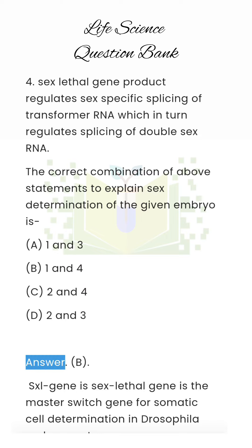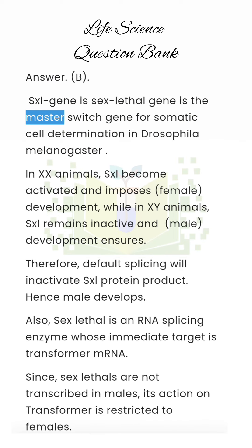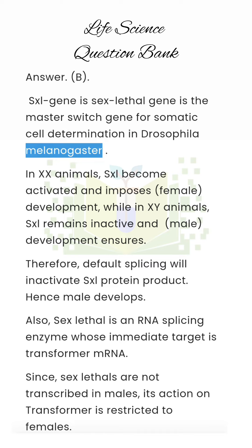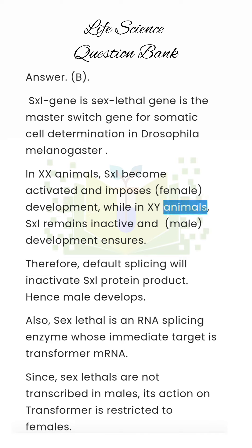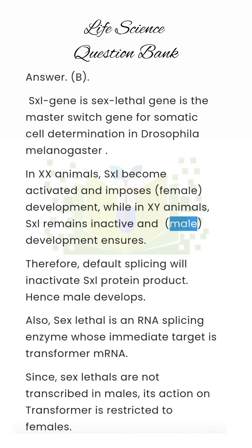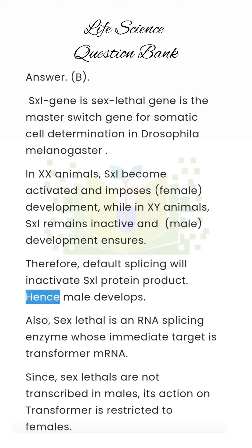Answer: B. The sex-lethal gene is the master switch gene for somatic cell determination in Drosophila melanogaster. In XX animals, sex-lethal becomes activated and imposes female development, while in XY animals, sex-lethal remains inactive and male development ensues. Therefore, default splicing will inactivate the sex-lethal protein product, and hence male develops.